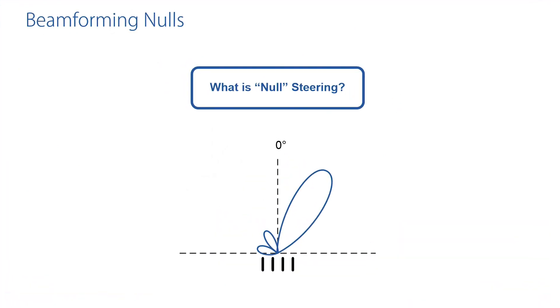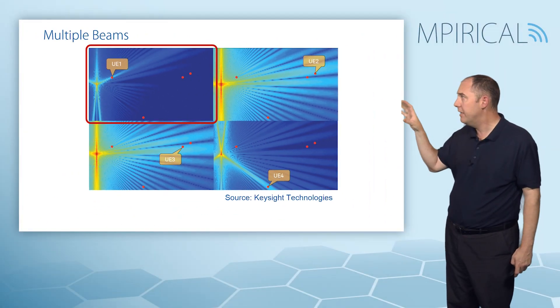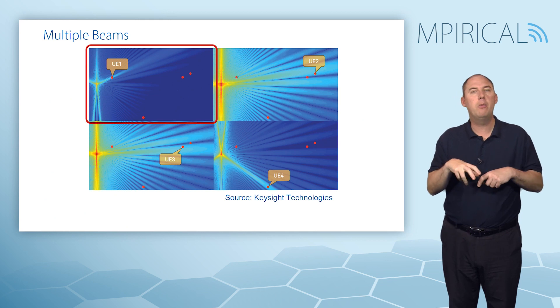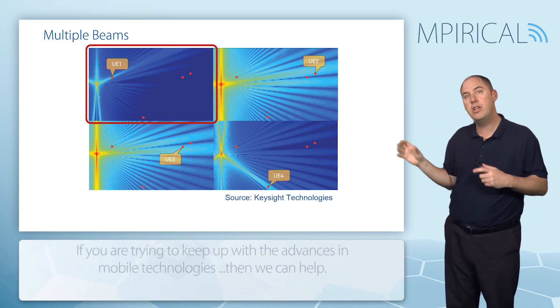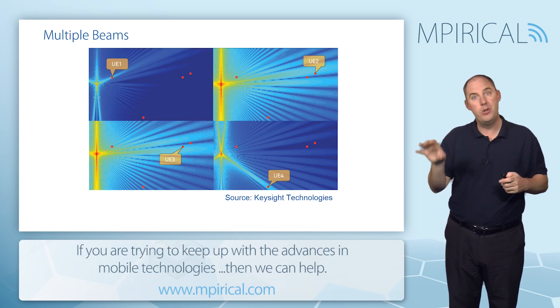Another key part here is the term null steering. The nulls—what are the nulls? Well, if you take that steered beam that we had previously, there are nulls, there are points where we're not transmitting. Those nulls are equally as important as the actual main beam. And you might say why is that, and the best thing here is to give you an example. So I'm actually going off to an example from Keysight Technologies.